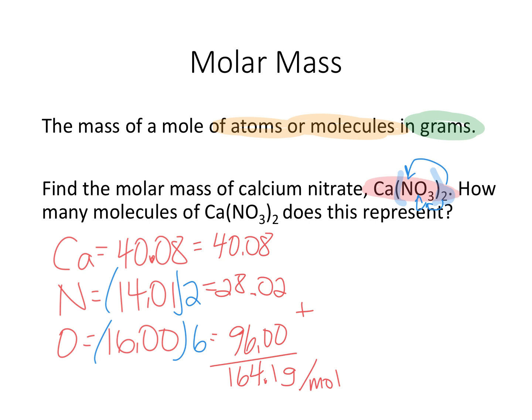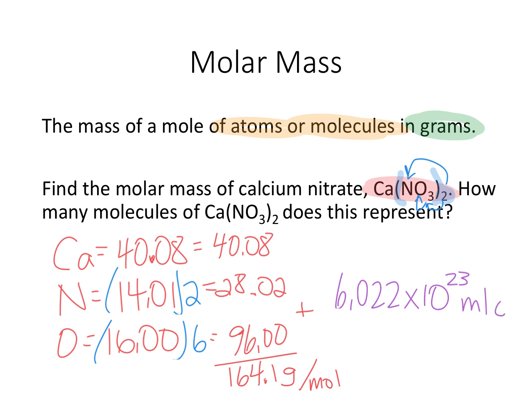So how many molecules of calcium nitrate does this represent? That is 6.022 times 10 to the 23rd molecules, because the molar mass is the mass of one mole of a substance, and one mole always has 6.022 times 10 to the 23rd molecules, or atoms, or ions, or whatever it is that you're looking at.